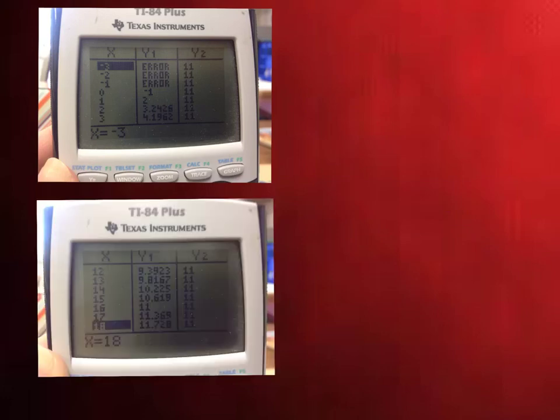And what this tells you is when you look here, when the x goes down to 0, after 0, y is an error. So we know that it only works starting at 0. And then when you look down here, you see that it does, at 16, it does actually equal 11. So all of these are less than 11, and then 16 is the end.